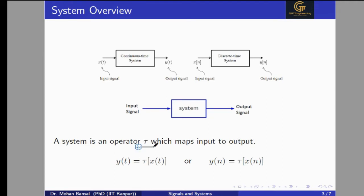This capital T is our system operator. If you pass the input signal through this system, we will get the output signal. So this T is the system operator — we are passing the input signal to this system and from the other side, the receiving side, we are getting the output.